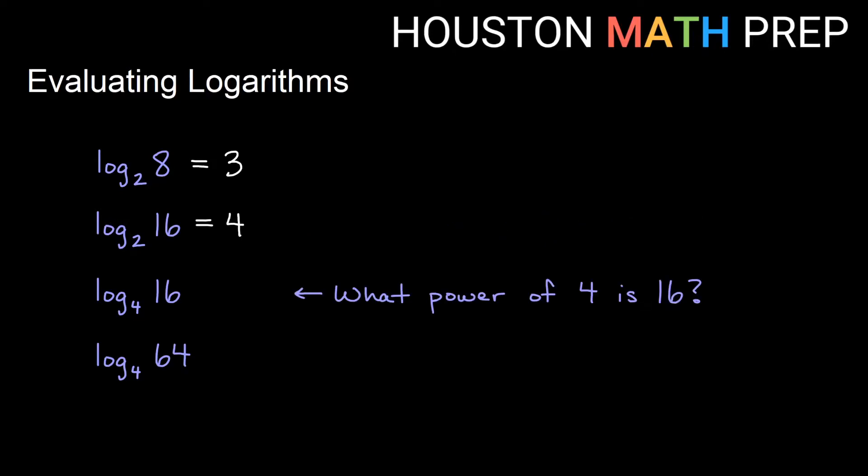Looking at the next one we have log base 4 of 16. This one is saying what power of 4 is 16. In other words, 4 to what number gives us 16? Since 4 squared gives us 16, the answer is 2. Our last one here is log base 4 of 64. That's saying what power of 4 is 64. 4 times 4 times 4 is 64, or 4 cubed. So our answer is 3 for this one.